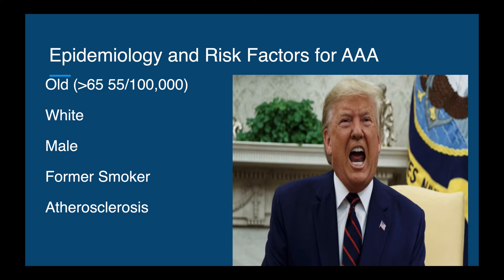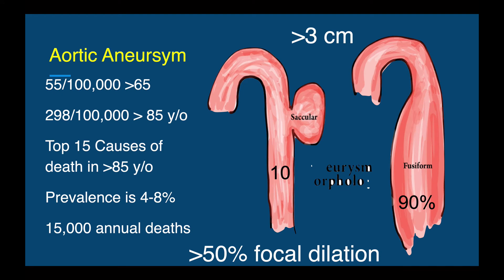Risk factors for AAA: the classic poster child is old, greater than 65, white, male, former smoker, with probable atherosclerotic heart disease. An aneurysm is defined as more than three centimeters; 90% are fusiform and 10% are saccular, with almost all occurring around or below the renal arteries. As patients age to 85 years old, the rate reaches 300 per 100,000 people. It's among the top 15 causes of death in patients over 85, with a prevalence of 4 to 8%.